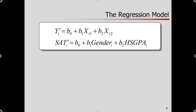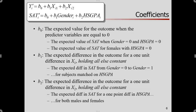Let's build the model: intercept plus slope times predictor plus slope times predictor. If we use dummy coding for gender, our intercept is the expected value when all predictors are zero — so when gender is zero and high school GPA is zero, that's females with a zero high school GPA. What would we predict for their SAT? That's not very informative because you don't have a zero high school GPA.